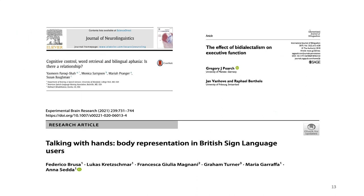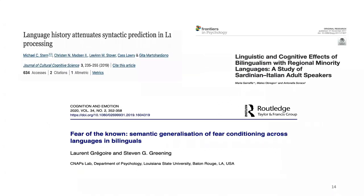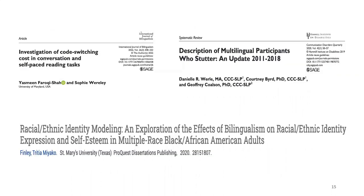Further slides show journals including neurolinguistics, the International Journal of Bilingualism, Experimental Brain Research — including a very recent article on British Sign Language — a journal of cognitive and cultural cognitive science featuring syntactic prediction in L1 processing, Frontiers in Psychology on linguistic and cognitive effects of bilingualism, a journal on cognition and emotion on semantic generalization of fear conditioning across languages, as well as code switching, stuttering, and racial-ethnic identity modeling in a recent dissertation.